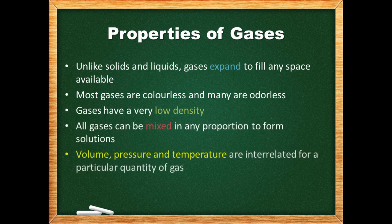Volume, pressure, and temperature are interrelated for a particular quantity of a gas. This means that changing one of these three properties will affect at least one of the other two, given the quantity of gas is kept constant. Additionally, the state in which we observe any substance is dependent on the temperature and pressure.